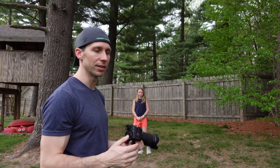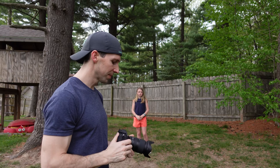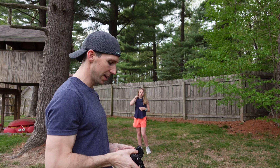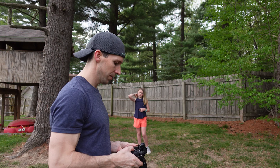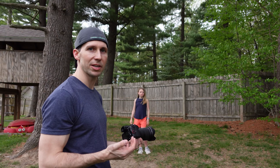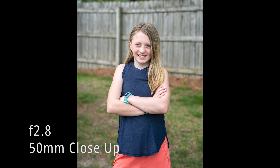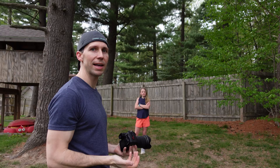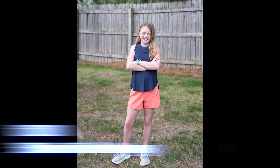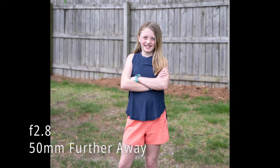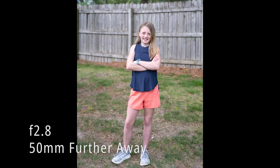For the next example we're going to go back down to f/2.8, and I'm going to get closer to my subject and take a picture to see how distance affects depth of field. As you can see, getting a lot closer at 50 millimeters f/2.8 makes that background very soft and blurry. Comparing it to a shot from the original spot at the exact same settings, you can see a lot more detail in the background — because being closer to our subject shrinks down the depth of field, making the background even softer and blurrier.